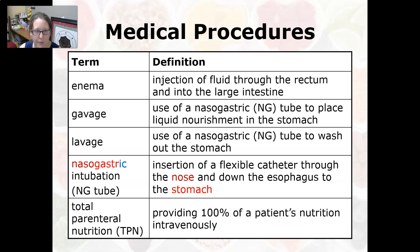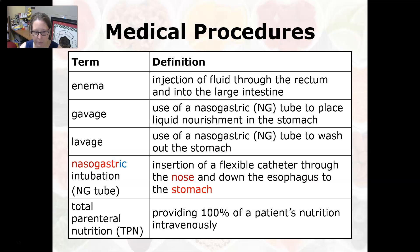Lavage is used if someone swallowed something like a poison or too many pills. Nasogastric intubation, or an NG tube, is the insertion of a flexible catheter through the nose, down the esophagus, into the stomach. Total parenteral nutrition, or TPN, is providing 100% of the patient's nutritional needs intravenously.